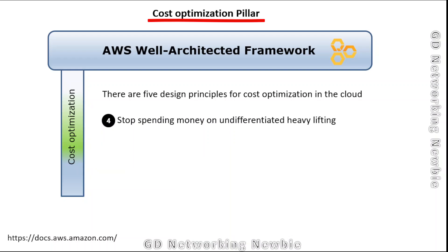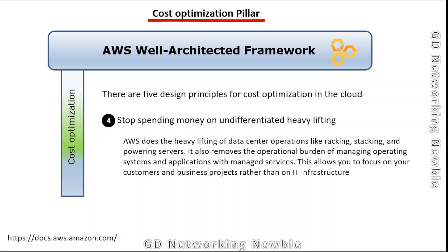The fourth principle is stop spending money on undifferentiated heavy lifting. In the cloud, AWS does all the heavy lifting of data center operations like racking, stacking, and powering servers. It also removes the operational burden of managing operating systems and applications with managed services. As a result, this allows you to focus on your customers and business projects rather than on IT infrastructure.